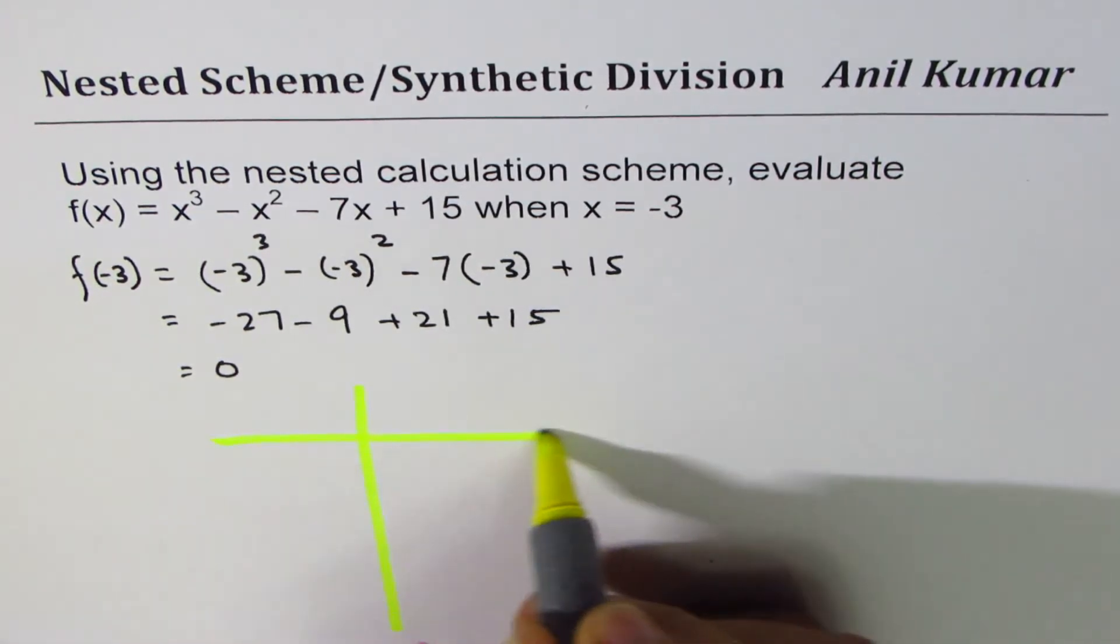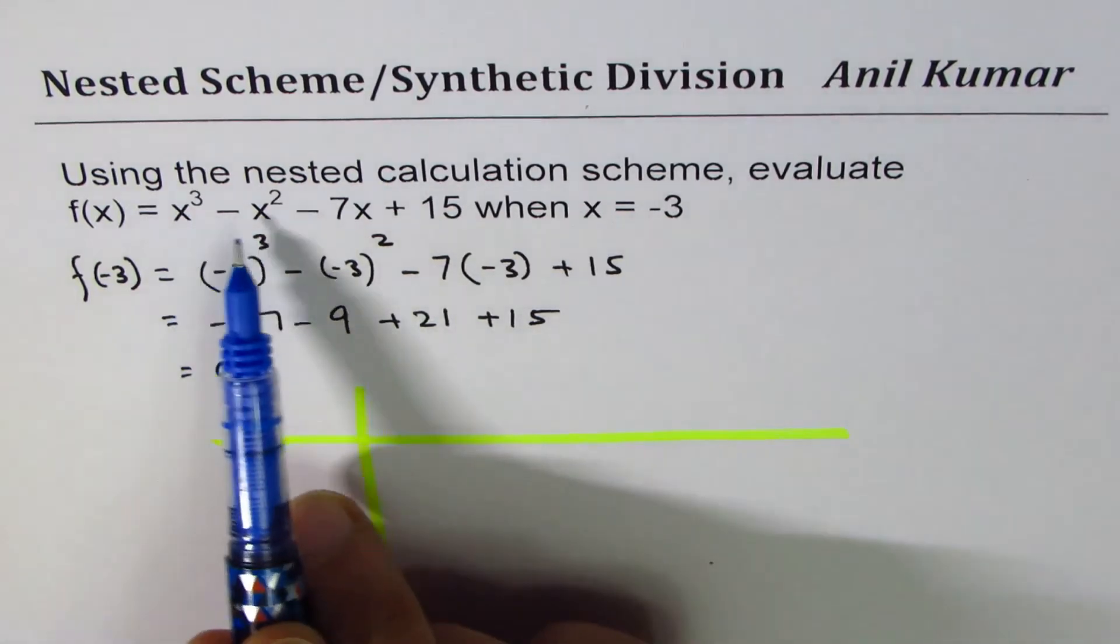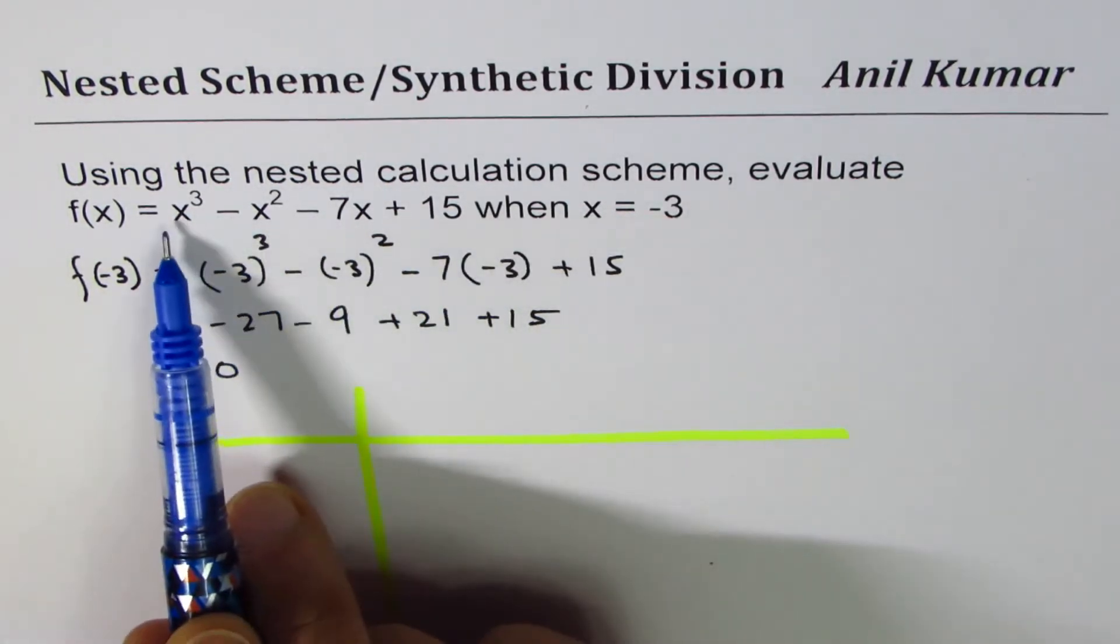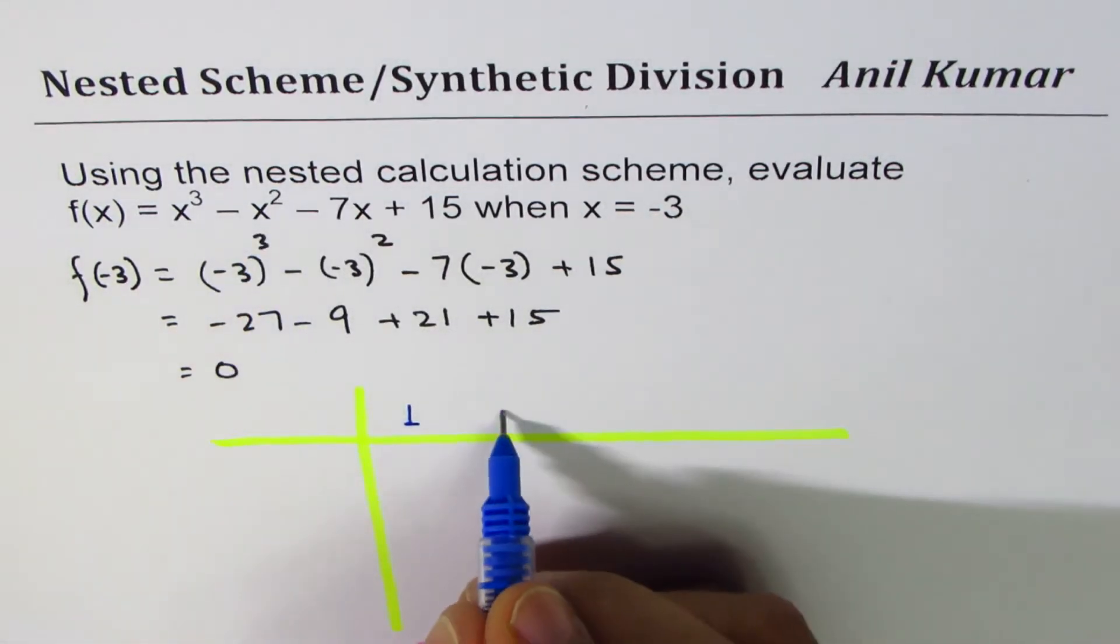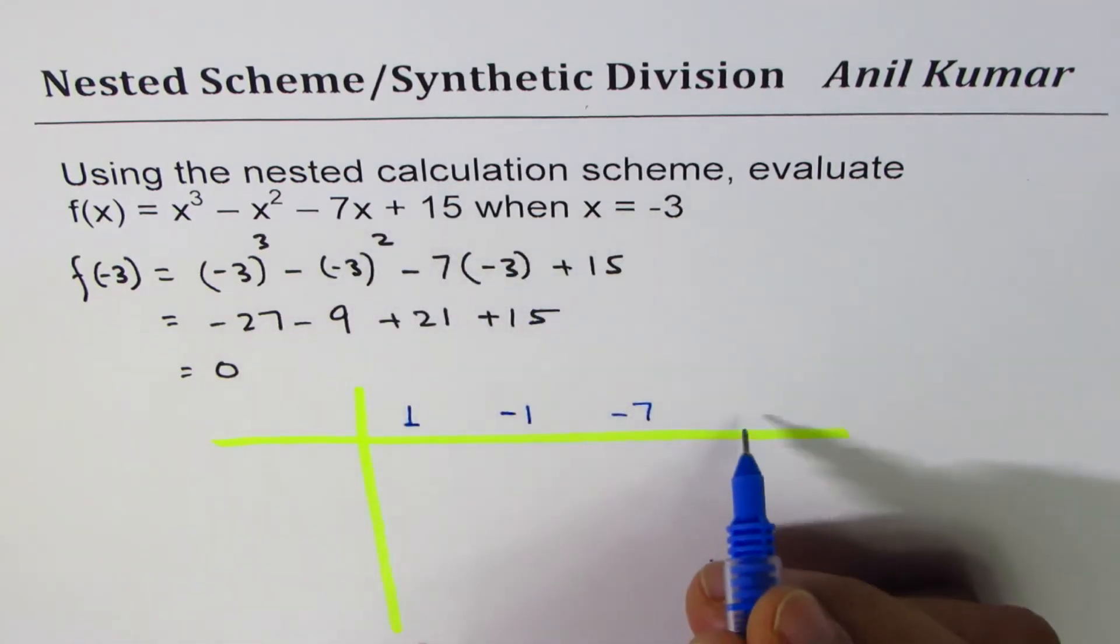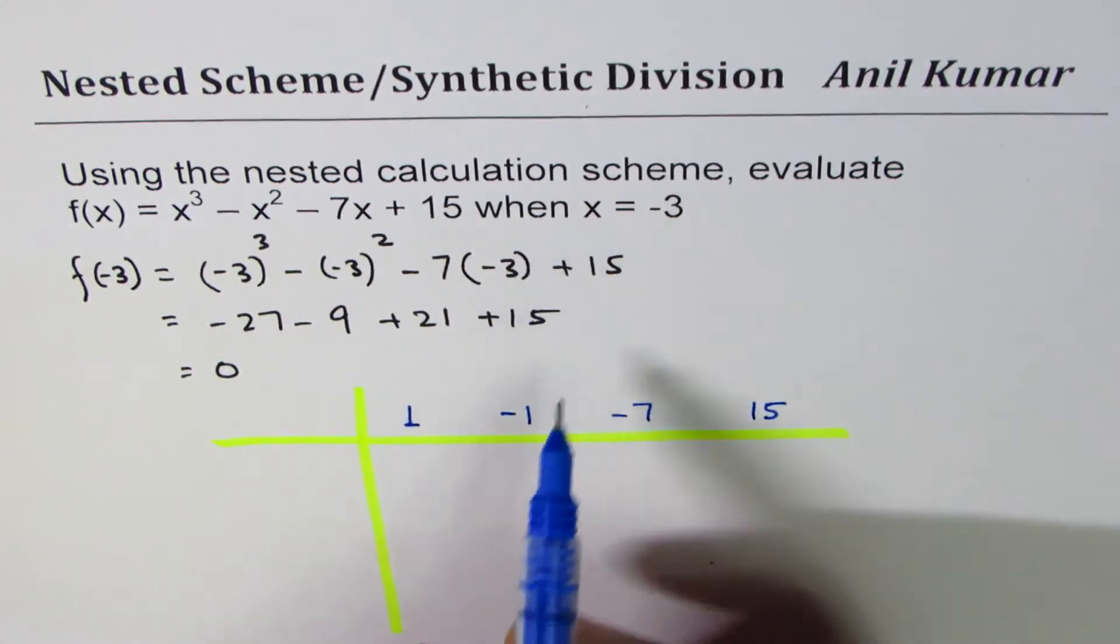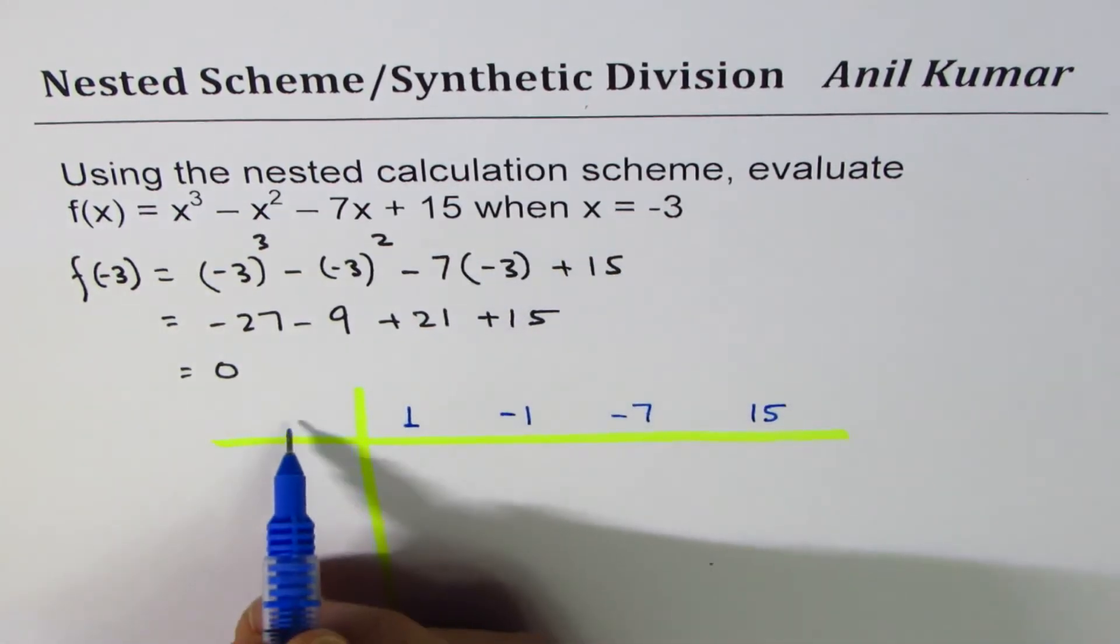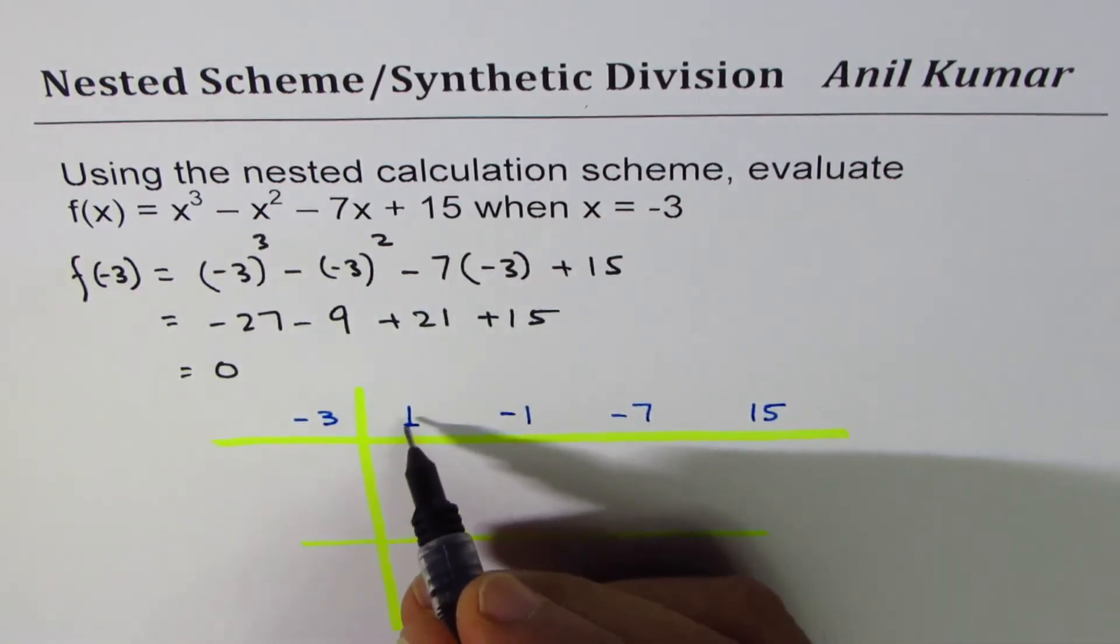What you do is take coefficients of the numbers. The coefficients given are 1 for x³, -1 for x², -7 for x, +15. We want to know its value at x = -3, so we write -3 here, drawing the line as we do in synthetic division.